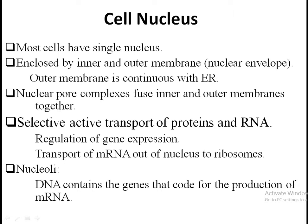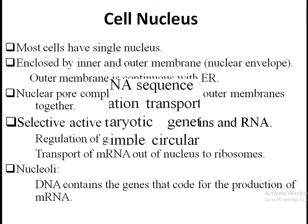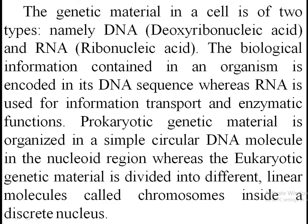The genes control cell function by determining which substances are synthesized within the cell — which structures, which enzymes, which chemicals. The genetic material, that is the DNA and RNA: the biological information contained in an organism is encoded in its DNA sequence, whereas RNA is used for information transport and enzymatic functions.